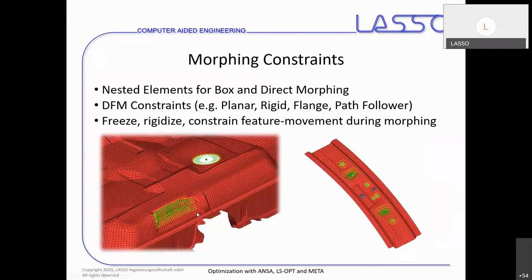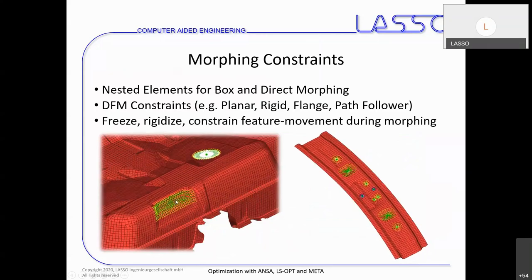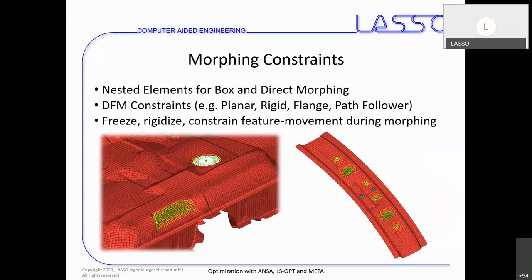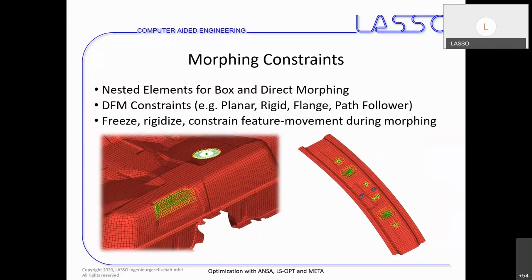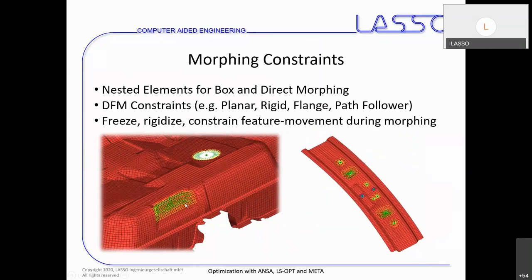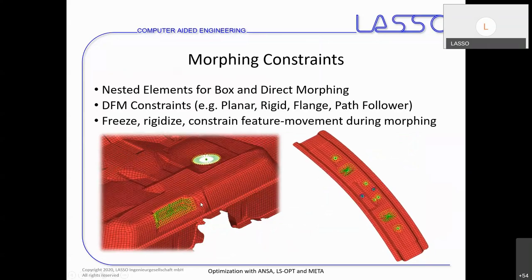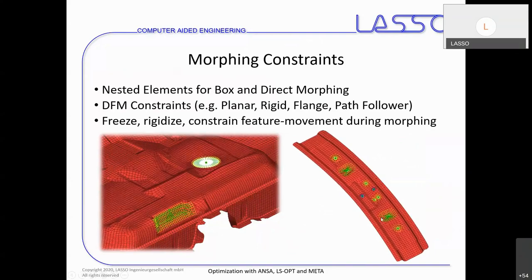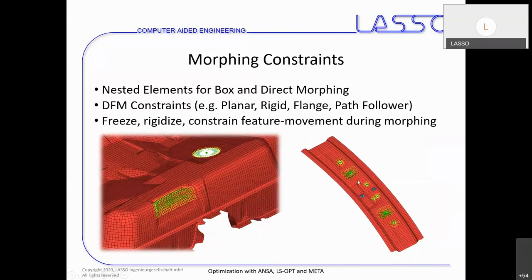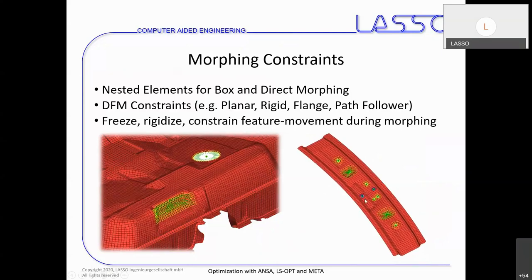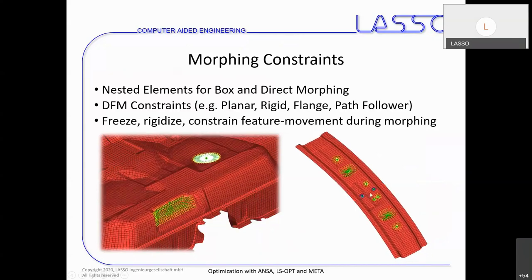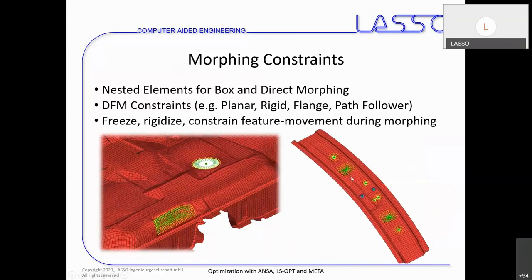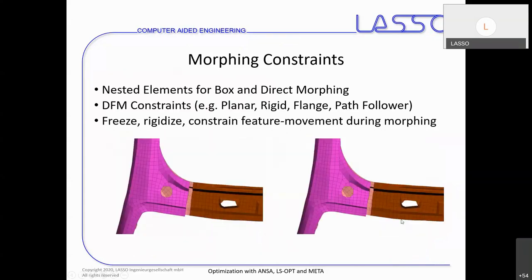Nested elements can be applied on box morphing or direct morphing. For example, a bead or hole should not be morphed as a shape itself, but its location should follow the shape of the whole part. Or if you have a cross member like in the roof example, when we increase the width, the holes should keep their shape but their position should change according to the size change. These nested elements are applicable to both box and direct morphing.